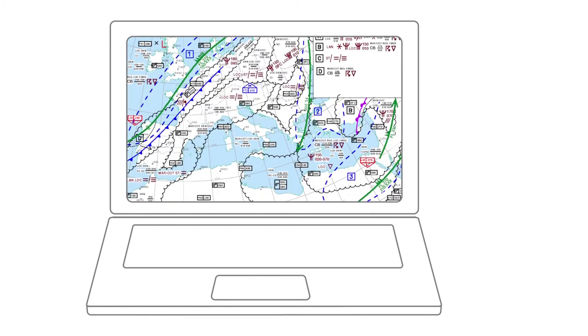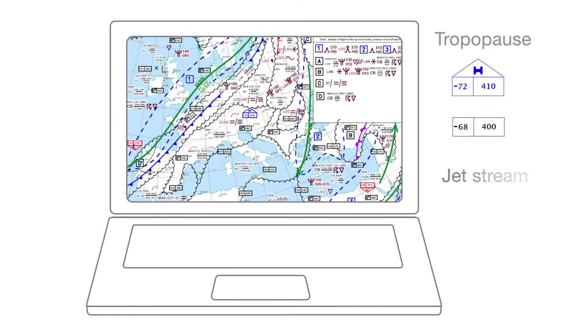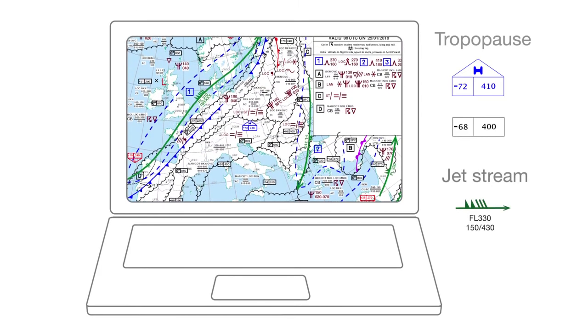The SIG weather will give us the tropopause temperature and height. And in addition, we can see the altitude and strength of the jet streams.